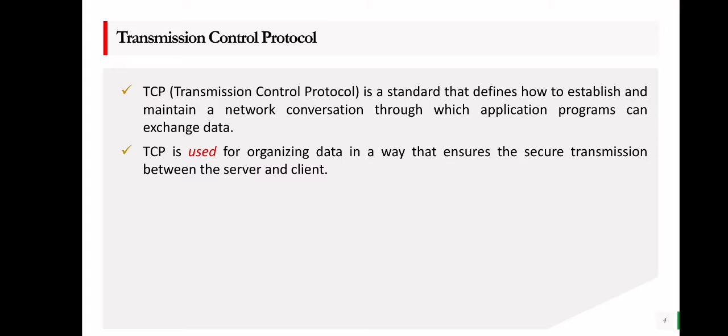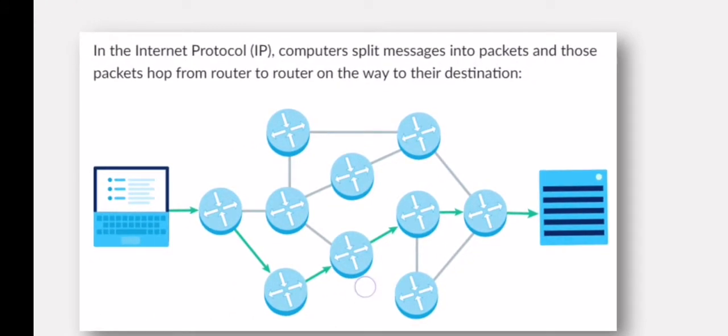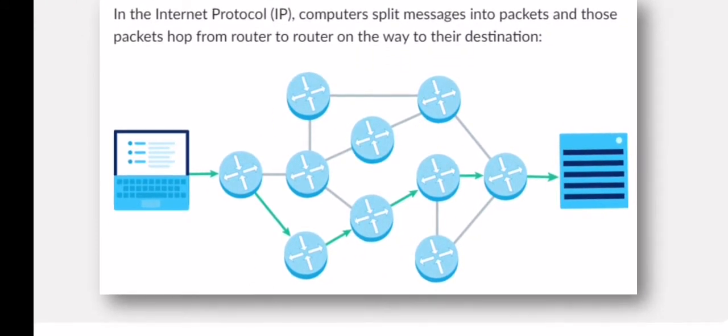Internet Protocol, or IP, defines how computers send packets of data to each other. A packet is the unit of data that is routed between an origin and a destination on the Internet or any other packet-switched network. Shown in the illustration is how packets hop from one router to another to reach its destination.